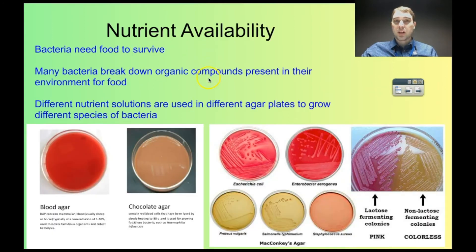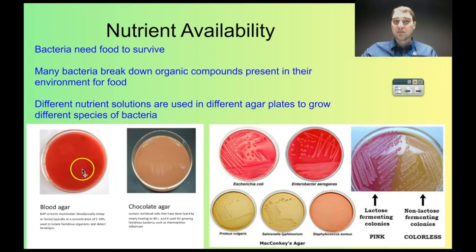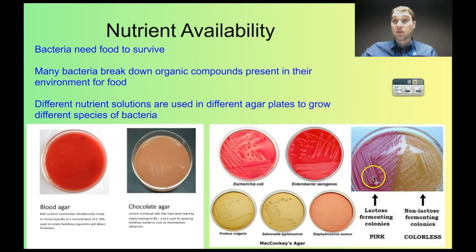Bacteria need food to survive, and oftentimes they're breaking down specific organic compounds as their food. We can use this to break bacteria into different groups based on the type of foods they eat. In biology labs we often use different types of nutrient agar — different nutrient solutions to grow bacteria. So this one's called blood agar, which is a jelly that contains blood. This is chocolate agar that contains blood cells that have been burst, and that's why it looks like chocolate. Different bacteria will grow on these different agar preparations. Over here we have MacConkey's agar — different colours correspond to different sugars being added to the mix. On this side lactose is being added; on the other side there's no lactose but we can still see bacteria growing. So we can add different sugars, different sources of protein, even different hormones, and we can use that to distinguish between bacterial species.